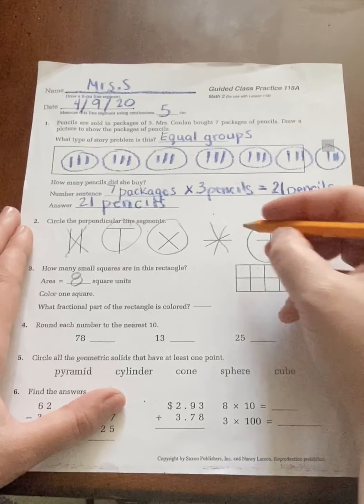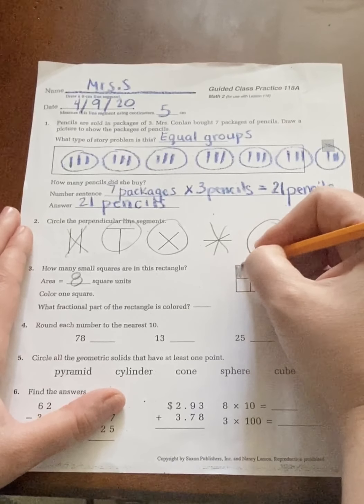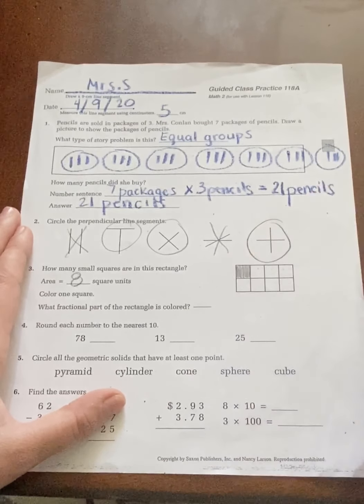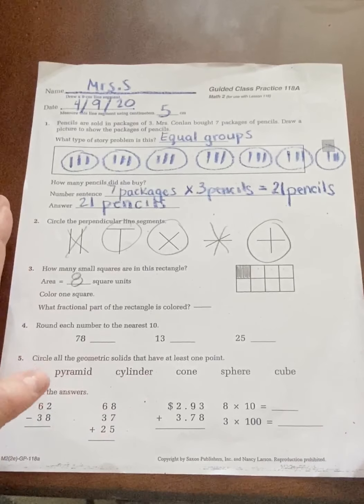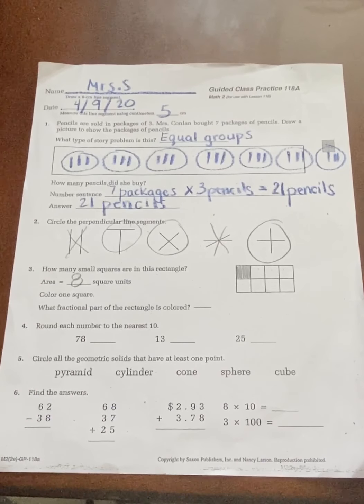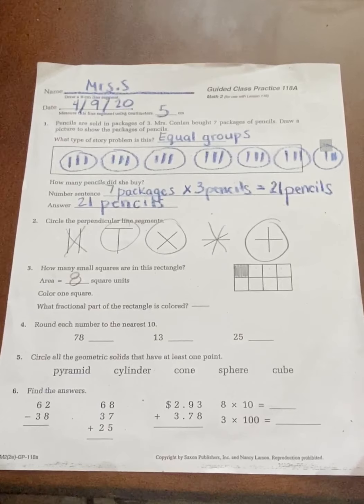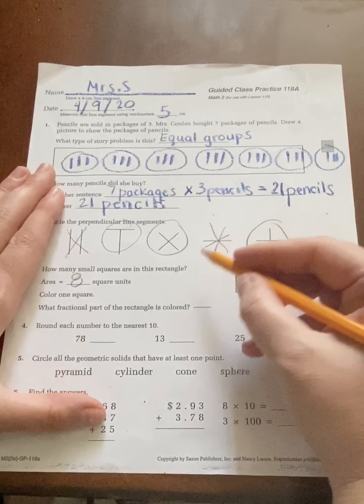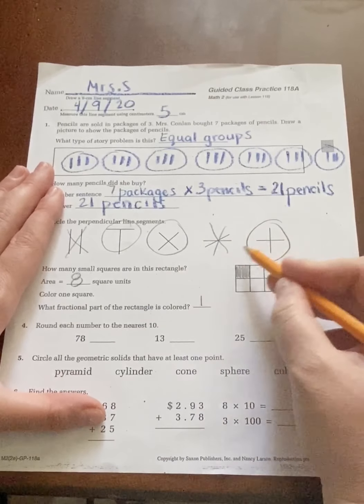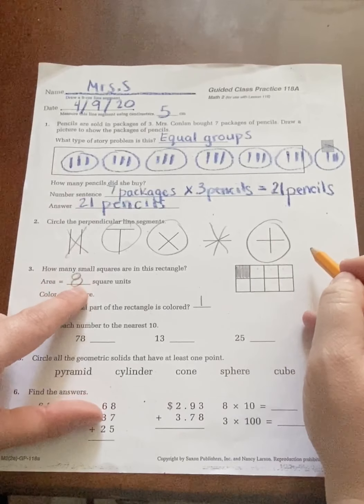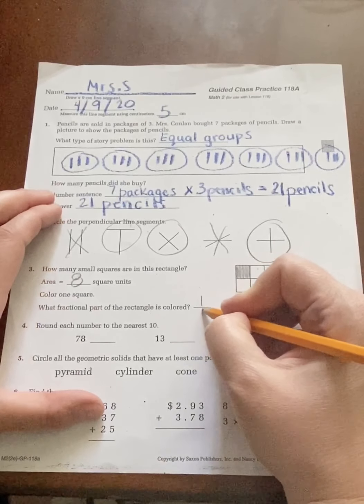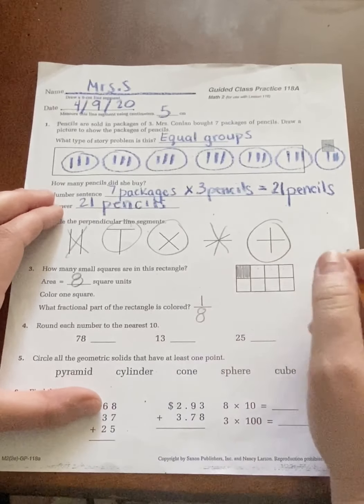Now it says color one square. What is the fractional part of the rectangle that is colored? So how many did we color in? One. And my part always goes on top. How many do I have total? We just added it up. Eight. So this fraction is called one eighth.